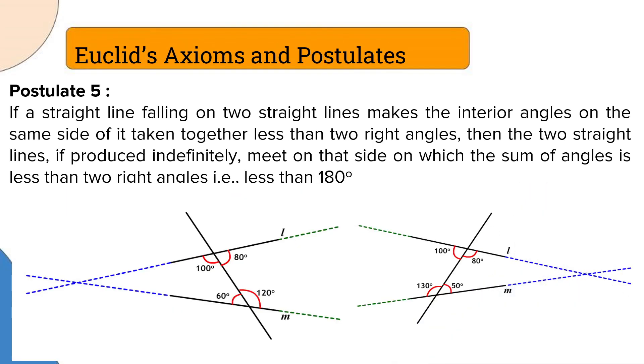So postulate 5 states: if a straight line falling on two straight lines makes interior angles on the same side of it taken together less than two right angles - two right angles is nothing but 180 degrees - then the two straight lines, if produced indefinitely, meet on the side in which the sum of the angles is less than 180 degrees. So if angles on this side when added are less than 180, when we produce the lines on this side, they will meet here. That is our postulate number 5.